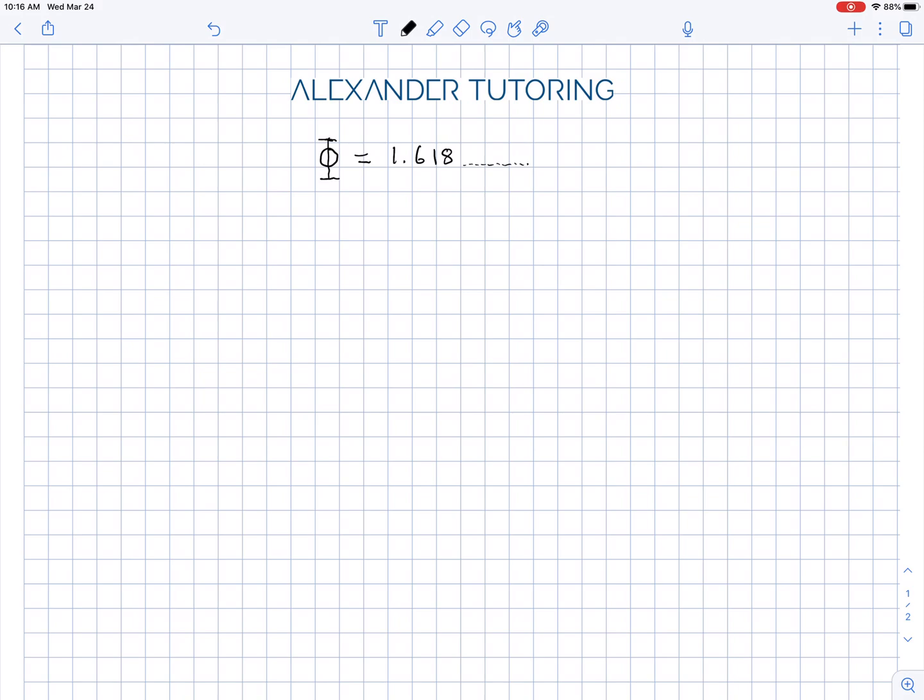So phi, they use the Greek letter phi to represent this number. It's an irrational number, meaning that it's a decimal that goes on forever without repeating, and it can't be expressed in terms of a fraction. Now where does this number come from?